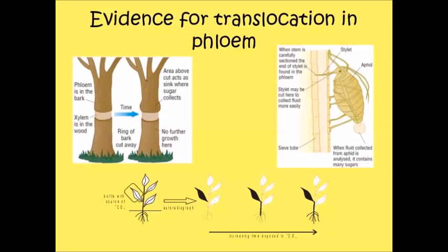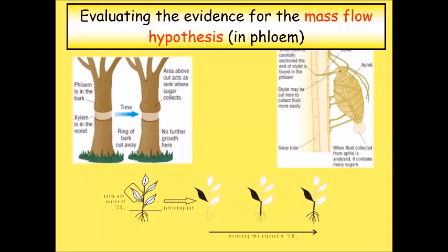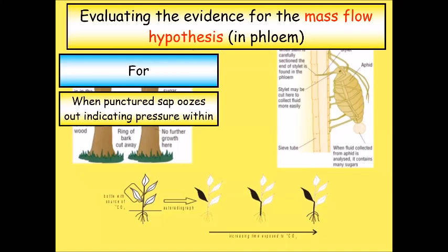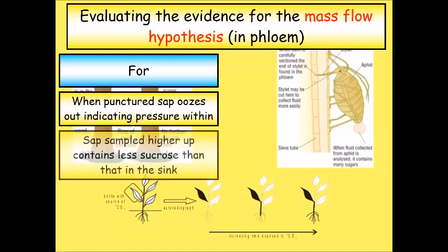And just evidence to support this, I tabulated this for ease. This is the sort of thing you have to do in a six mark question where they ask you to provide evidence or critically evaluate something, in this case mass flow theory.